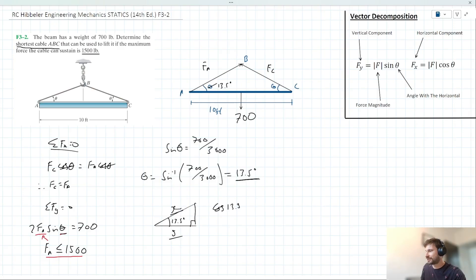So cos 13.5 degrees, in this case, is equal to the adjacent over the hypotenuse, or 5 over X. We can rearrange for X here, so we can say, therefore, X is equal to 5 over cos 13.5.